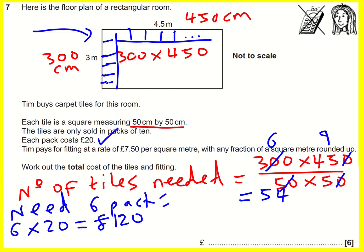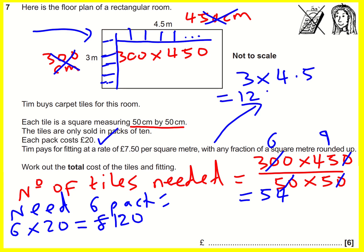Tim pays for fitting at a rate of £7.50 per square metre, with any fraction of a square metre rounded up. Now we want to return to metres — I want to work out the total area: 3 times 4.5. Well, 3 times 4 is 12, and 3 times 0.5 is 1.5, so I get 13.5 square metres. Any fraction of a square metre is rounded up, so that rounds to 14.